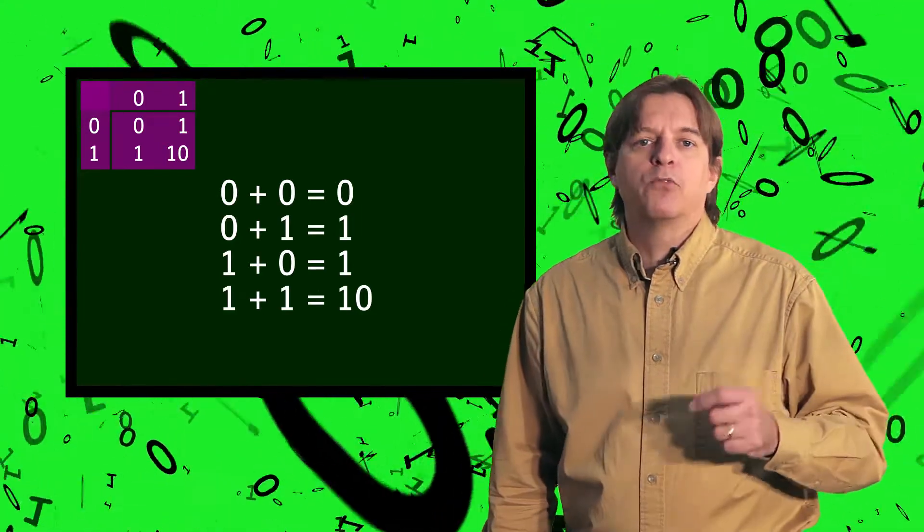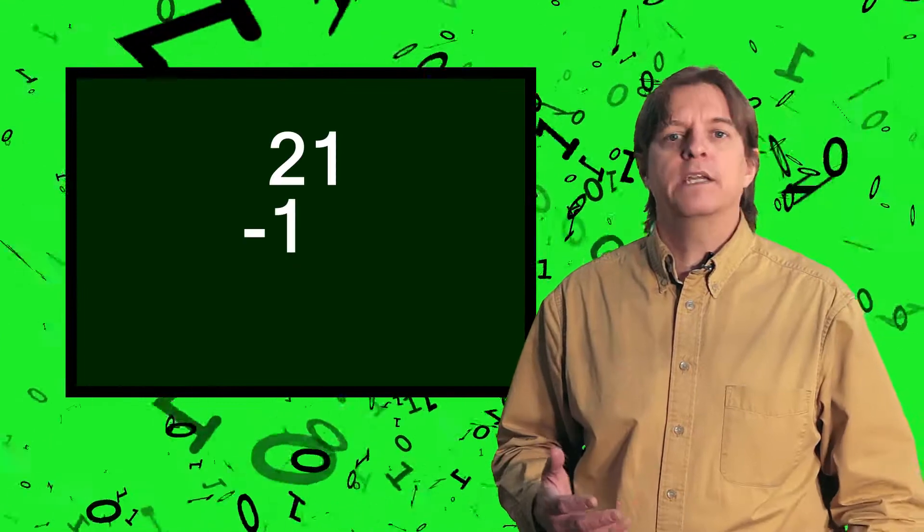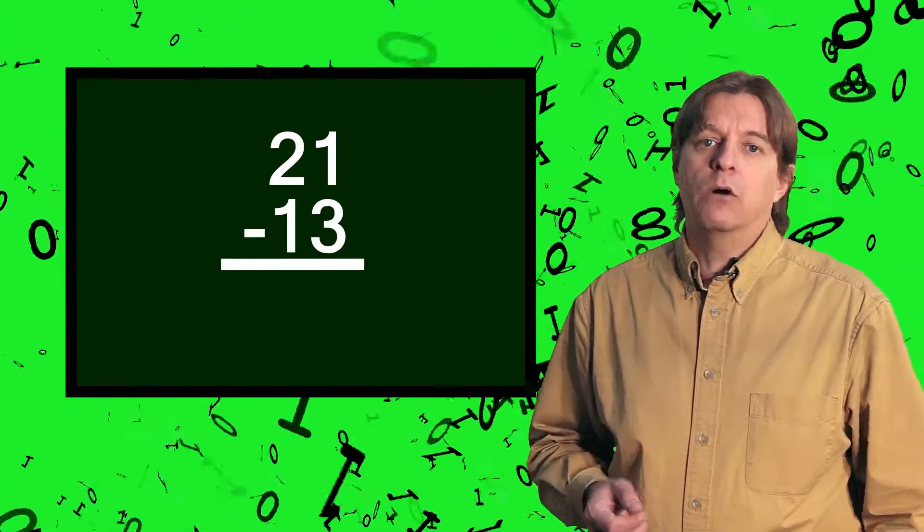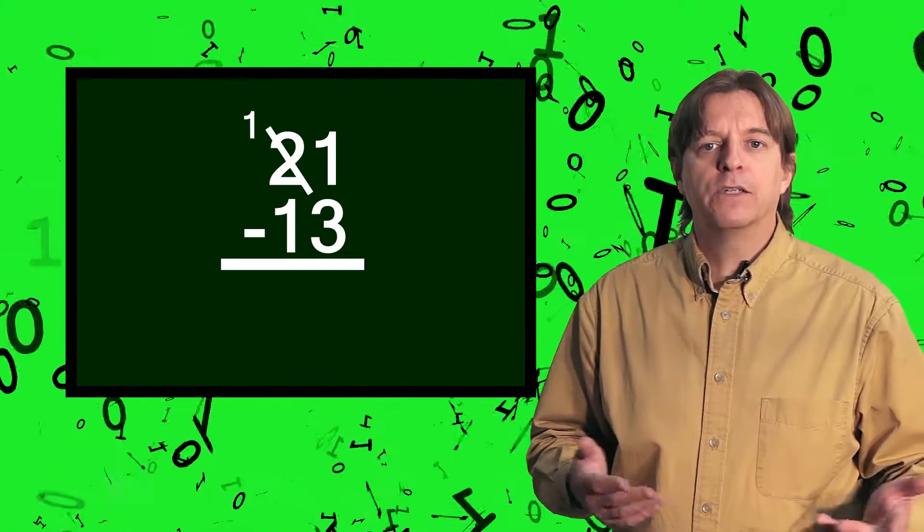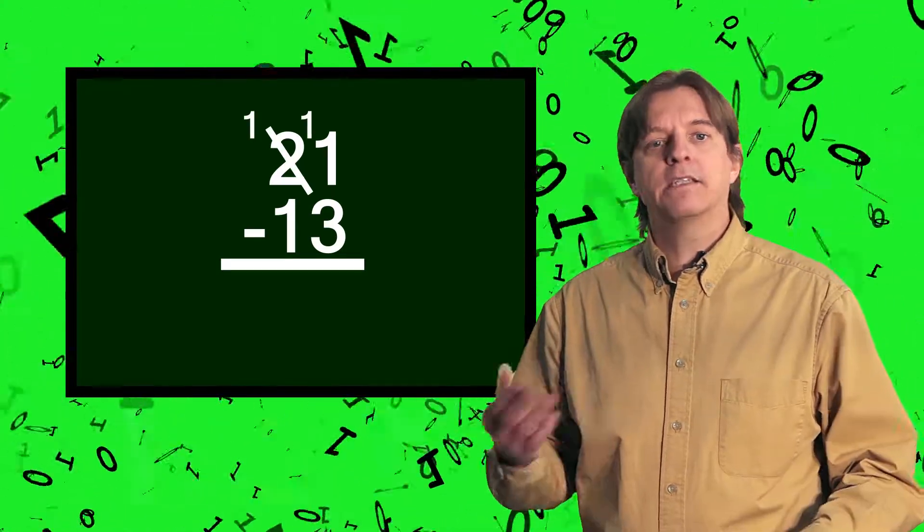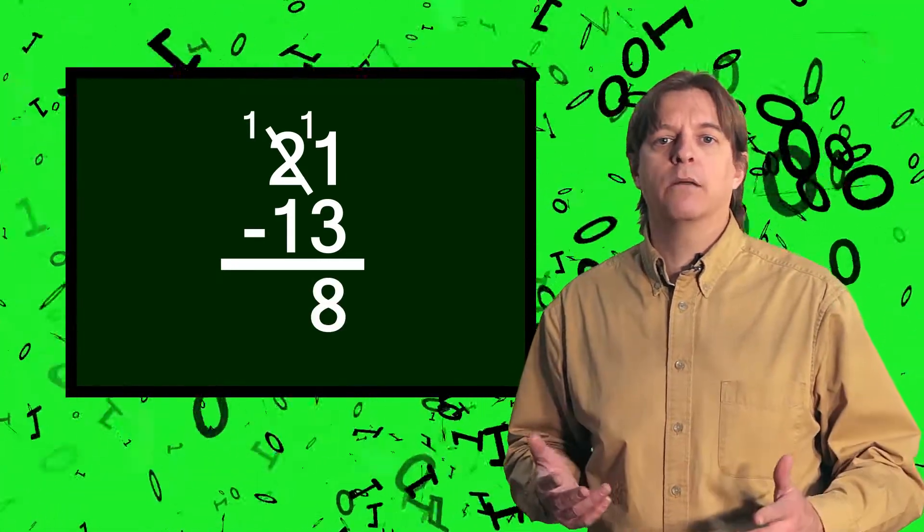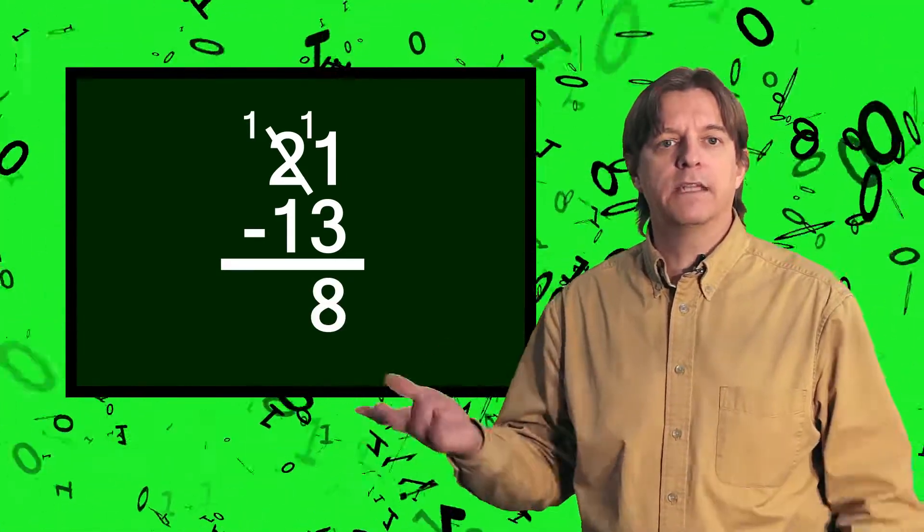If we recall from grade school with multi-column numbers, when we subtract a larger number from a smaller one, we have to borrow from the next higher column. Let's take, for example, 21-13 in decimal. The units column is 1-3. Well, we can't do that, so we borrow 1 from the 2 in the second column, giving us 11-3. This gives us 8. Moving to the next column, we now have 1-1, giving us 0.